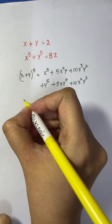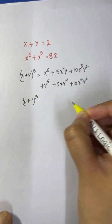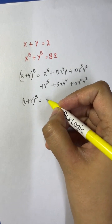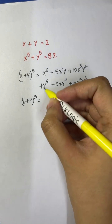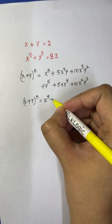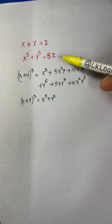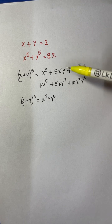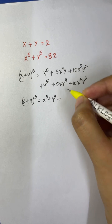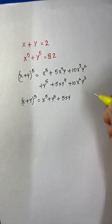So what are we going to get? (x+y) whole to the power of 5 is equal to — I am going to keep x to the 5 plus y to the 5 as it is, because as given in the question it equals 82, and I am going to use that. Then I am going to take 5xy common.